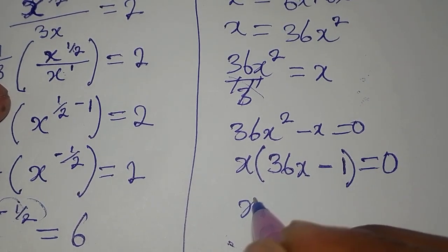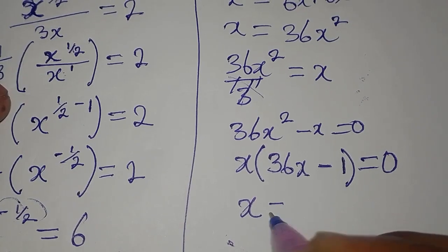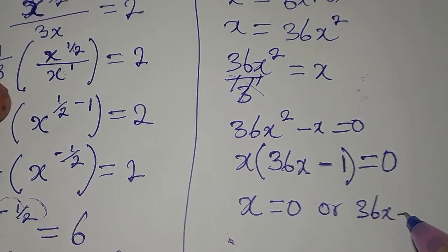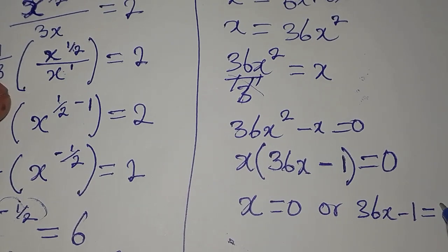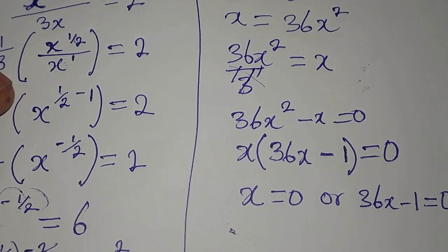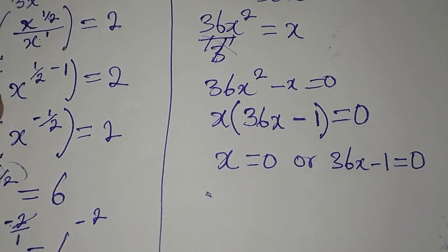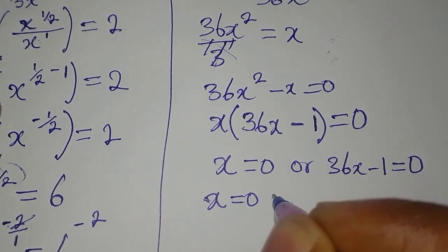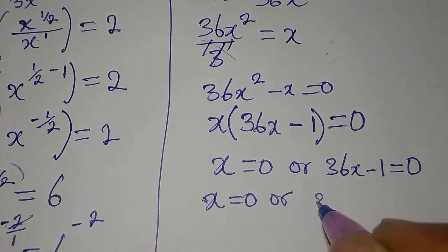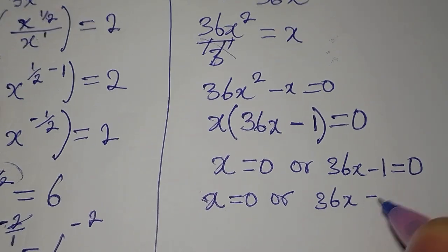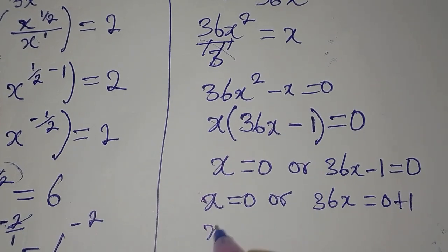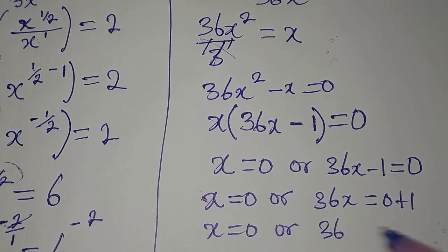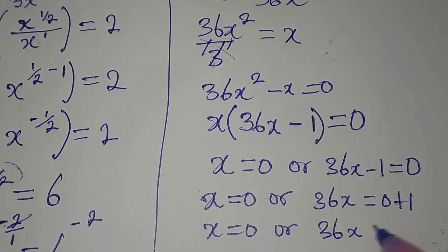From here now, we are going to have x to be equal to 0, or 36x minus 1 to be equal to 0. We are applying what we call the zero product rule. So our x from here remains 0, or 36x equals 0 plus 1. x remains 0.